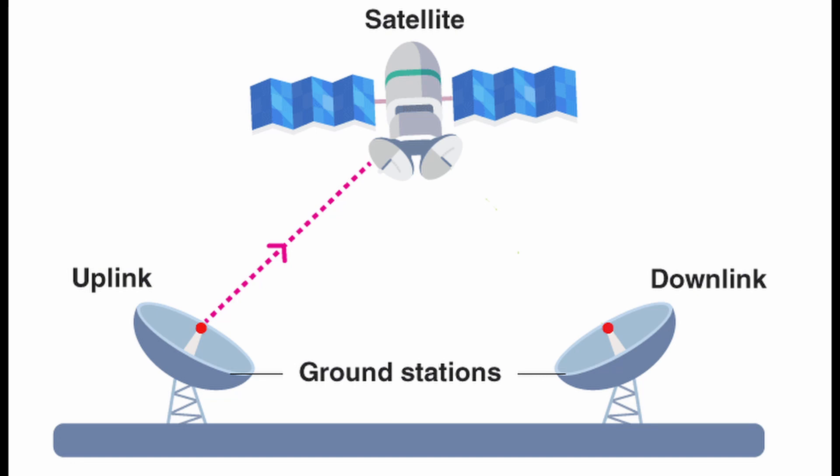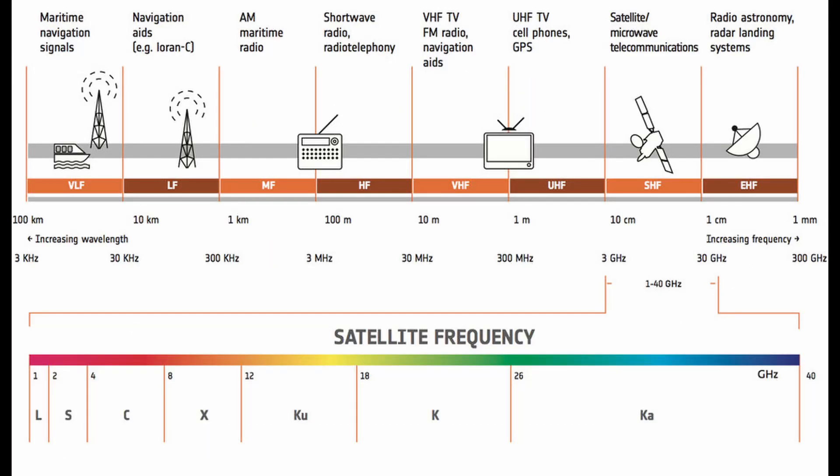The satellite takes the signal and performs many processes including filtering and amplification before it relays the signal back to a receiving ground station through a downlink channel. Depending on the bandwidth it operates at, the latency between uplink and downlink may also vary. The rule of thumb is: the higher the frequency it operates at, the lower the latency.